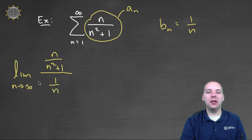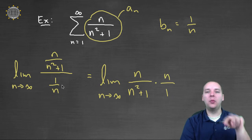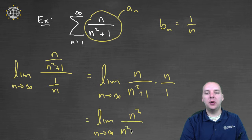So let's take this limit here, and let's see what this limit leads us to. I think it would be more easily done if we took the reciprocal of the denominator and rewrote it a little bit. Limit as n approaches infinity of n divided by n squared plus one times n over one, as opposed to divided by one over n, we took the reciprocal. This would lead us to the limit as n approaches infinity for n squared, divided by n squared plus one.